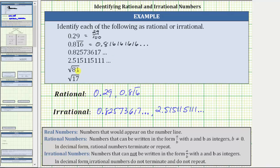Next, we have the square root of 81. 81 is a perfect square because it's equal to nine squared. The square root of 81 is equal to nine, and nine is rational because it can be written as a fraction with the denominator of one, or as a decimal it terminates. The square root of 81 is rational.